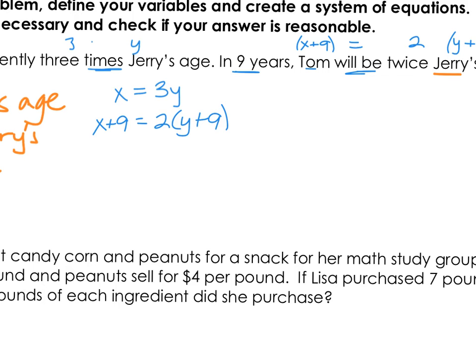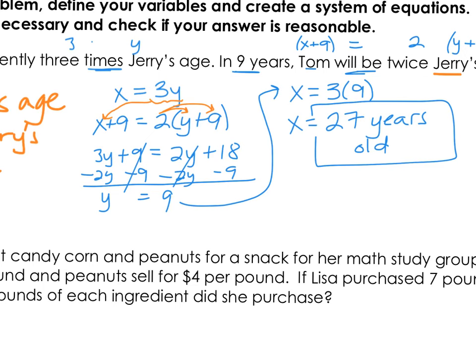Now if y equals 9, that's actually Jerry's current age. What we need to do is substitute it into the equation to get Tom. If Tom is currently 3 times Jerry's age, and Jerry is currently 9, Tom would then be 27. As far as our label, this would be 27 years old. That would be your first application question.